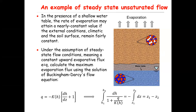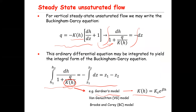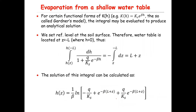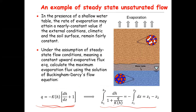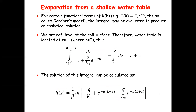Since it is a steady state unsaturated flow condition, we use the Buckingham-Darcy equation and express its integral form. We rearrange it and apply the integral as derived previously. The challenge is what function to use for the unsaturated hydraulic conductivity. To derive an analytical solution, we use Gardner's model: K(h) equals Ks times e to the power of beta·h. Substituting this into the integral equation, and bringing the exponential term to the numerator, gives us e to the power of minus beta·h divided by Ks.